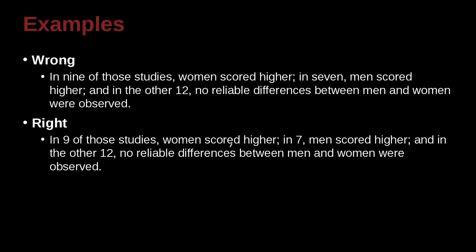In nine of those studies, women scored higher. In seven, men scored higher, and in the other 12, no reliable difference between men and women were observed. So this is getting a bit confusing. We're writing 'nine' here, spelling out 9, then spelling 7, and then writing 12. It seems like we're following the rule — nine and seven are smaller than 10, and 12 is bigger than 10. But because they're in the same sentence with many numbers being compared, in that case you just want to write out the numbers and not spell them at all.